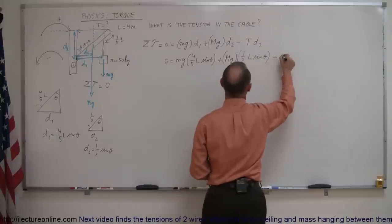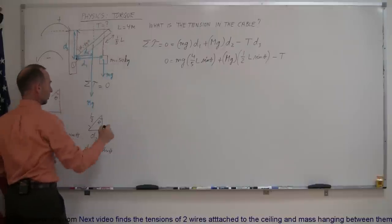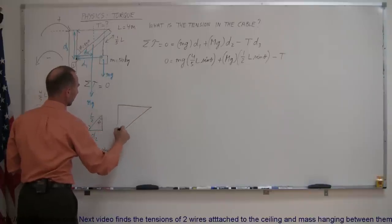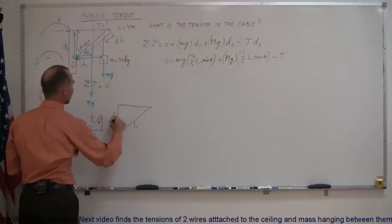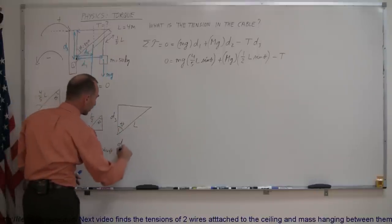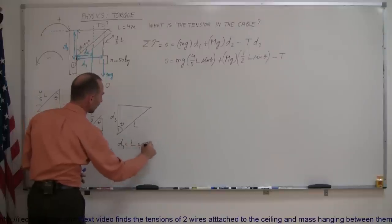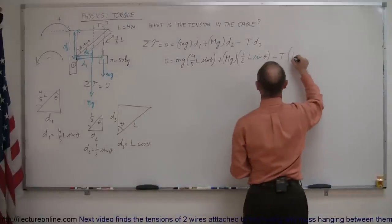Finally, I have minus the tension times d3. To find d3, I draw this triangle. We have this angle theta, the length of the beam L, and d3 is adjacent to the angle. So d3 equals the hypotenuse L times the cosine of angle theta, since d3 is adjacent to the angle. That gives us L times the cosine of theta.